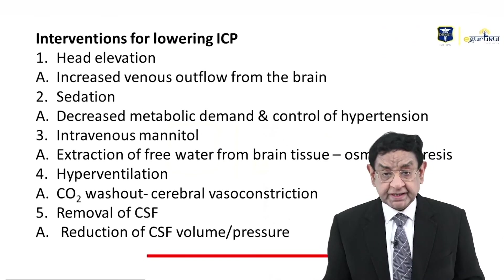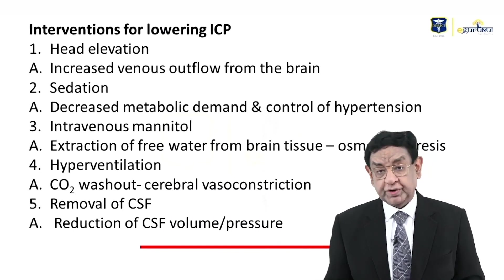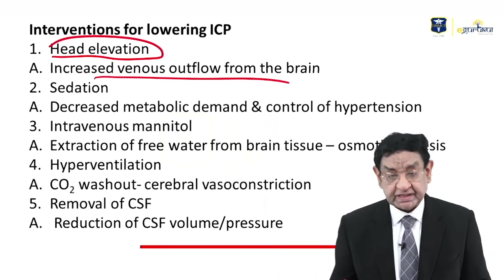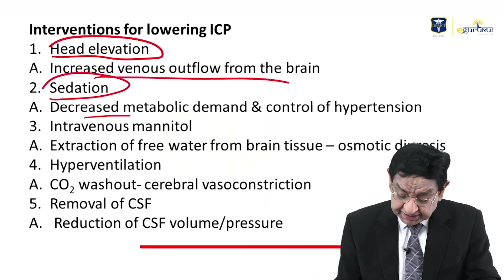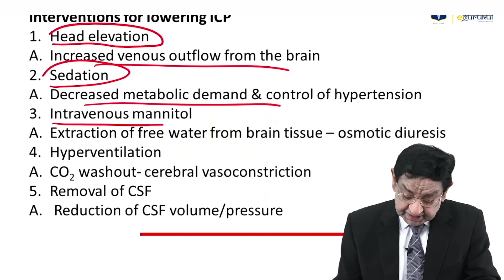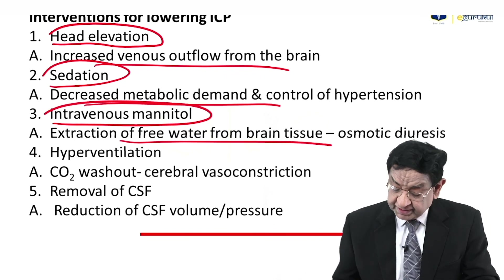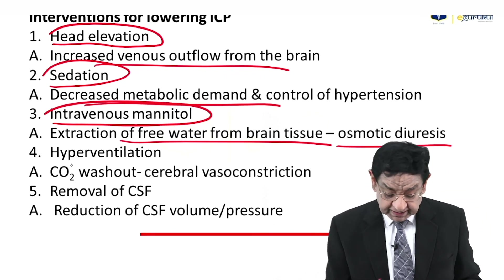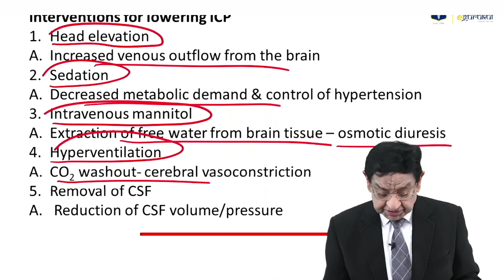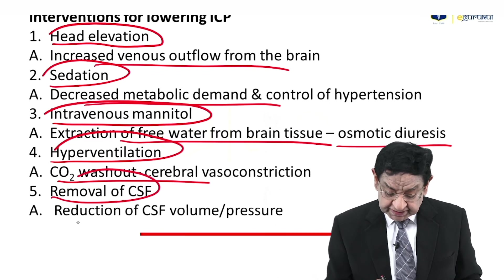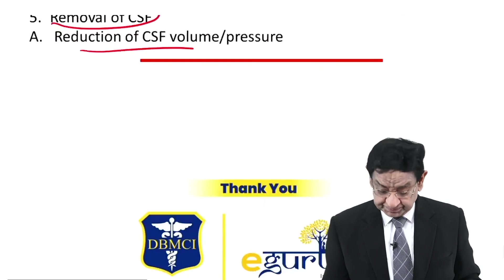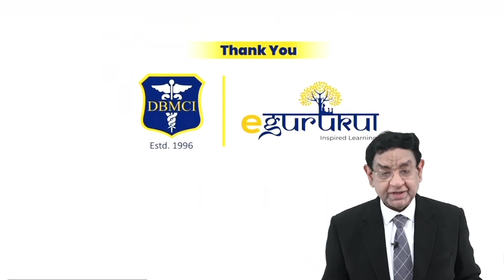A summary of interventions for lowering ICP: head elevation to increase venous outflow from the brain; sedation to decrease metabolic demand and control hypertension; intravenous mannitol acting as an osmotic diuretic; hyperventilation causing CO2 washout leading to cerebral vasoconstriction; and removal of CSF by repeated therapeutic lumbar puncture. Thank you very much.